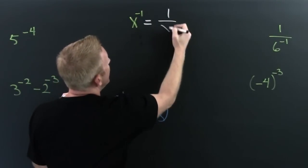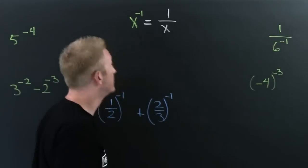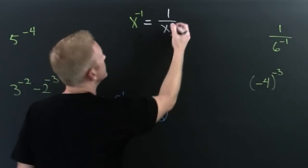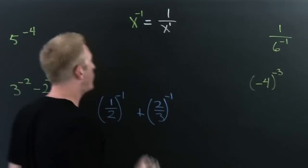That's going to be 1 over x. Why? And here's why.